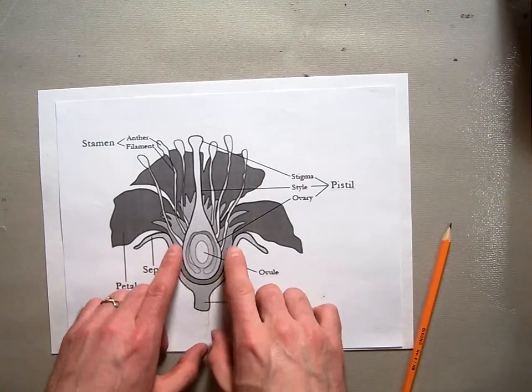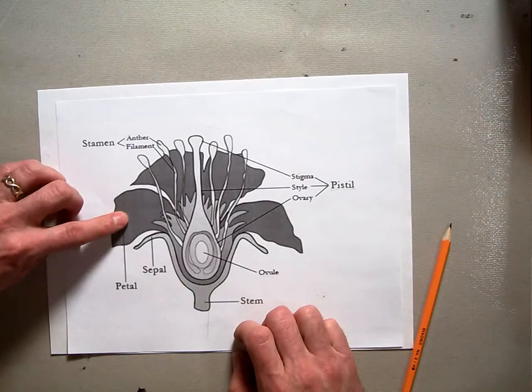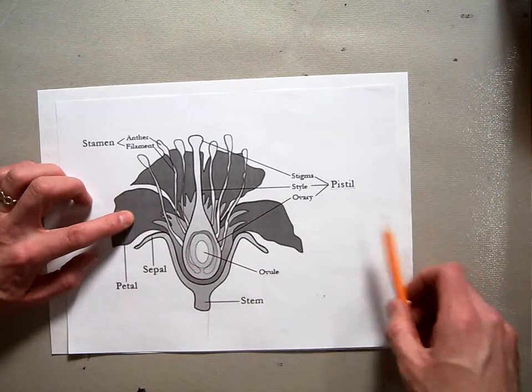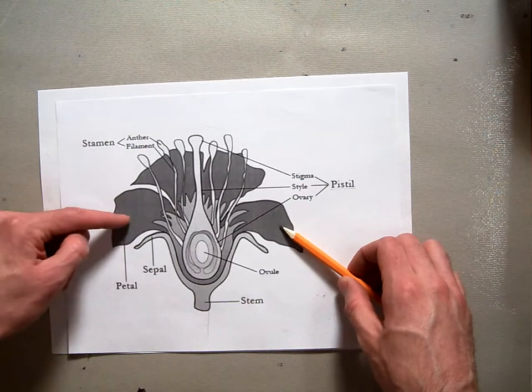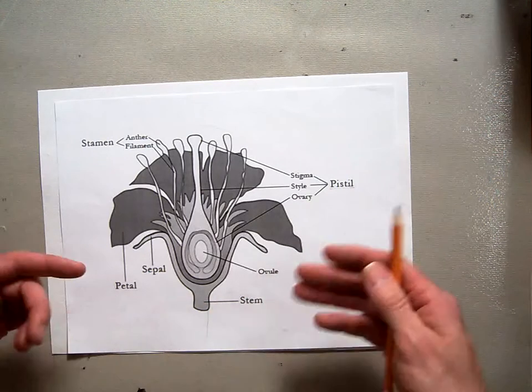Then inside the sepal is everything else. The petal, which is what usually gives a flower its colors, very bright, usually attracts the butterflies, bees, other insects, and birds that may do the pollination.